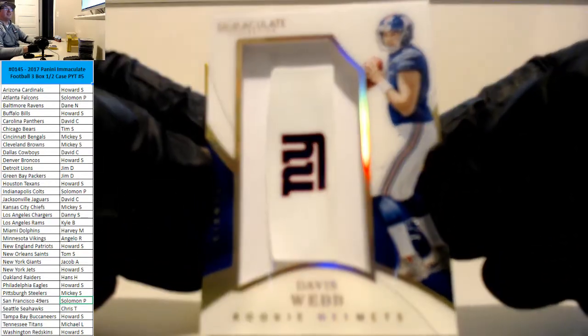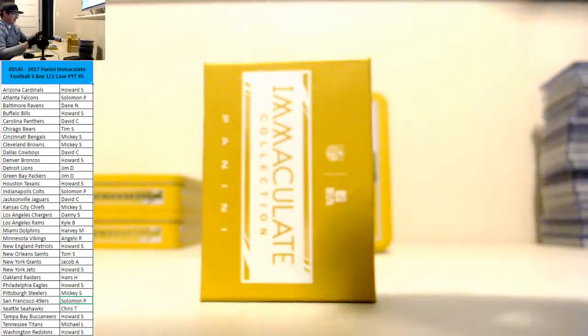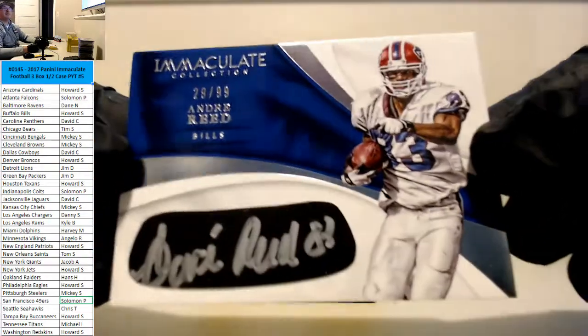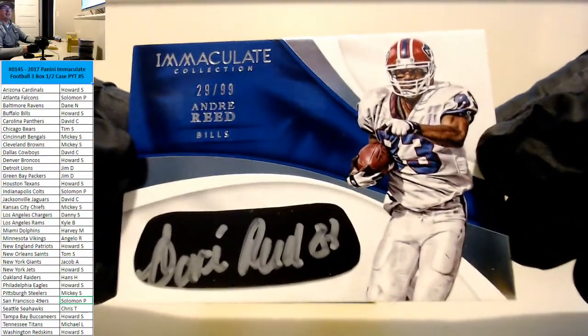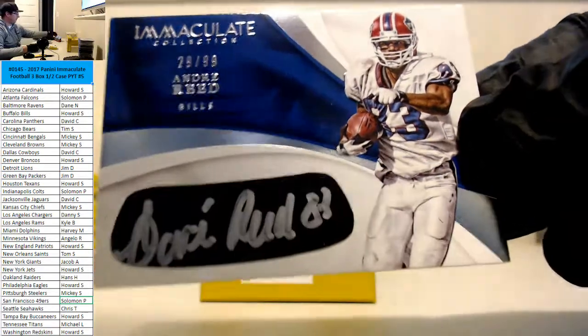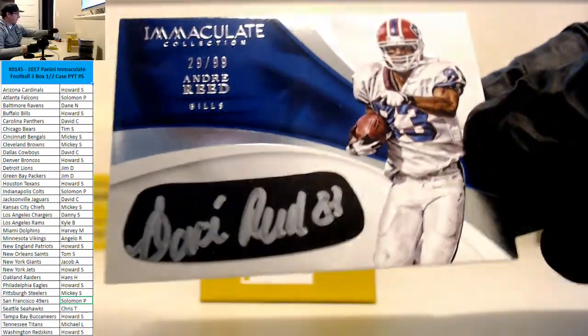Sorry again, Mickey. Damn. Sick cards, guys. Andre Reid for the Bills. 29 of 99. Yeah. Giants for a good pick. I will give Jacob that. Giants for a good pick.